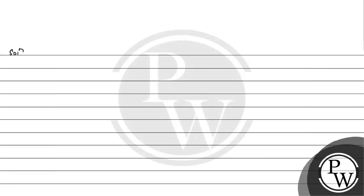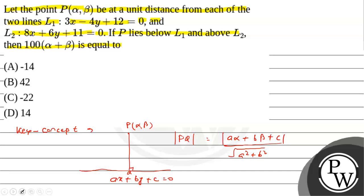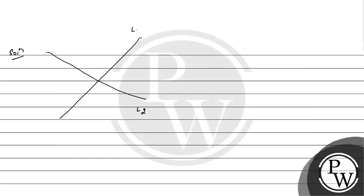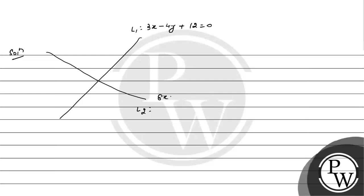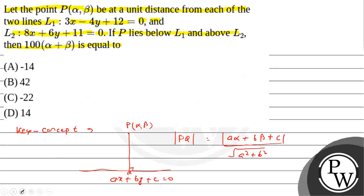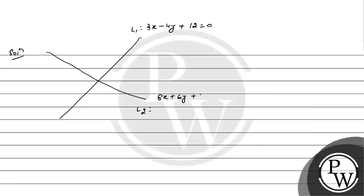Now see the solution. It is given that there are two lines — P lies below L1 and above L2. L1 is given as 3x minus 4y plus 12 equals 0, and L2 is given as 8x plus 6y plus 11 equals 0. Point P(α, β) is below L1 and above L2, and the distance from each of these lines is unity.